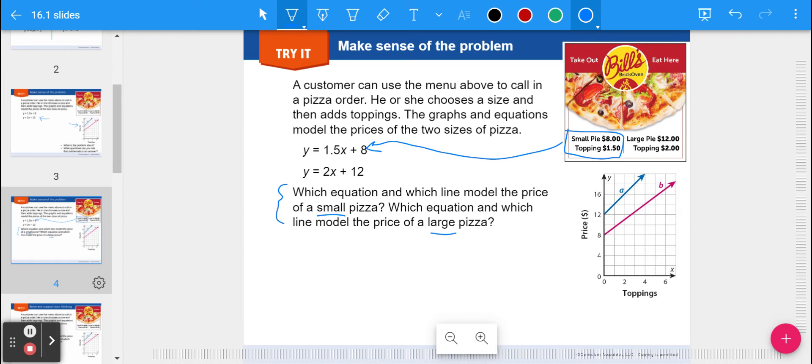The large pizza is twelve dollars plus two dollars per topping, so it's more expensive. The more toppings you add, the more expensive the pizza is.